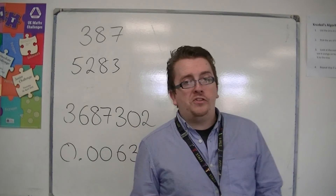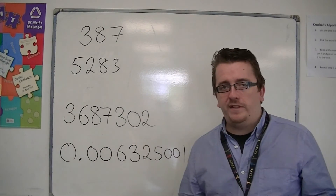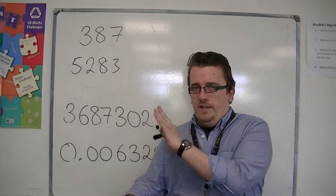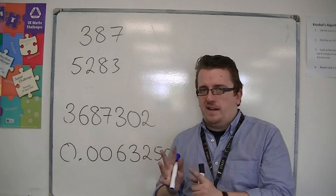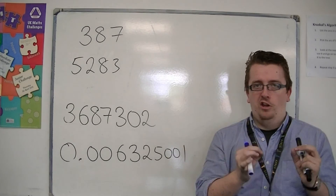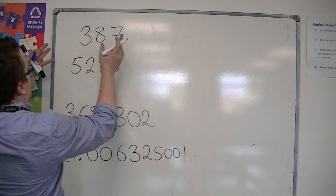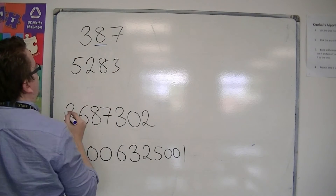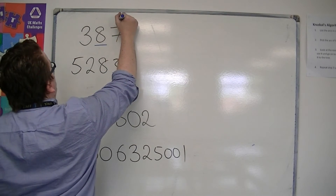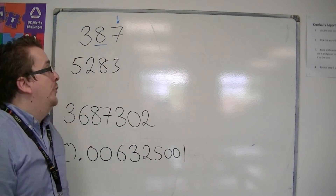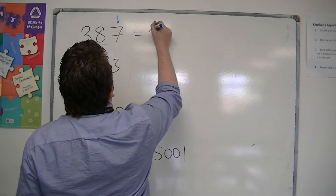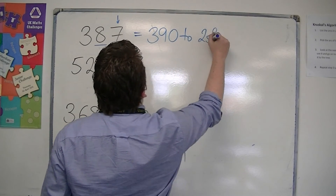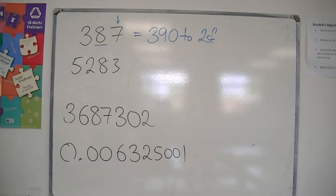To two significant figures, it works in much the same way as one significant figure. You're working from left to right, but you're trying to identify the second significant figure column. For 387, the first significant figure is three, the second is eight. I look one to the right — the seven is five or more, so I round up to 390 to two significant figures.